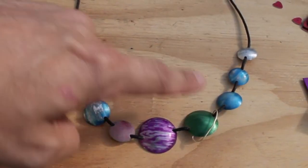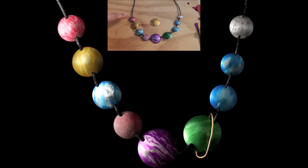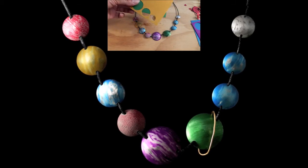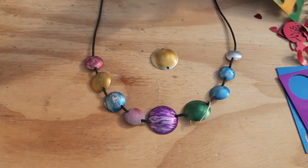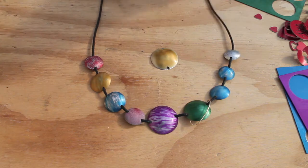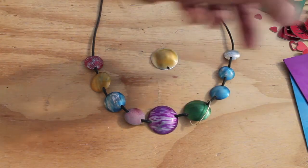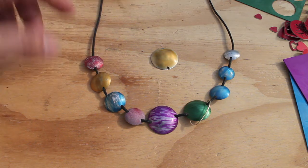This is a necklace that I made, and the inspiration was the planets of the solar system. Each one of these planets was cut out from the sheet using a disc cutter. You can see some of the shapes there. And then each one was put into a doming block and domed.